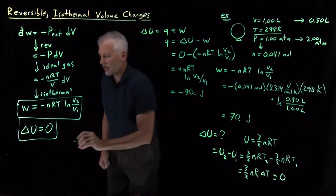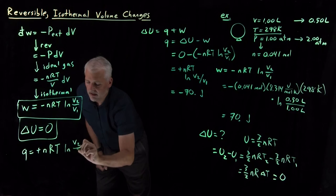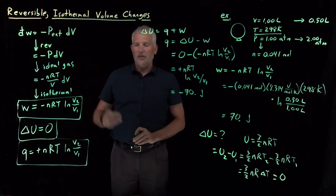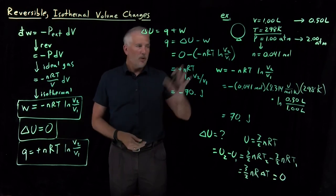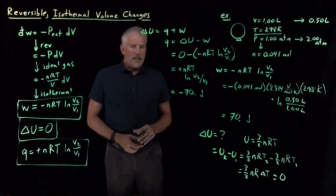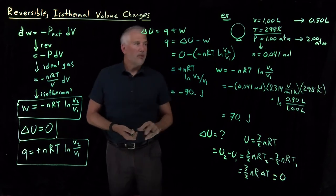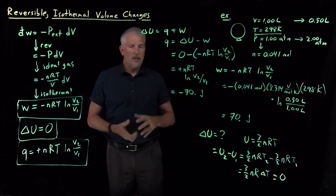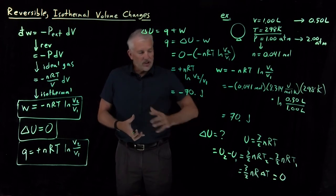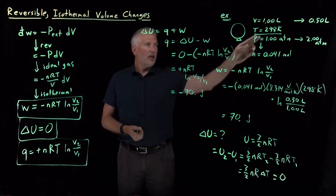We can now write general equations: the heat involved in expanding or compressing an ideal gas reversibly and isothermally is Q equals nRT log(V2/V1), and we can use these expressions without repeating the algebra each time. For this balloon being compressed to half its original volume at constant temperature, it costs 70 joules of PV work to do the reversible isothermal compression of one liter of ideal gas.